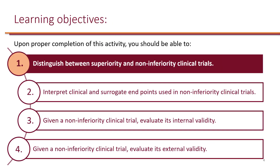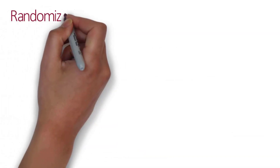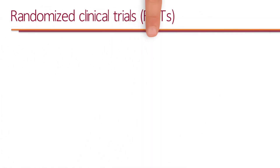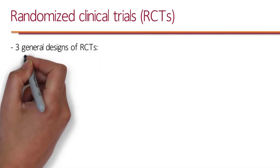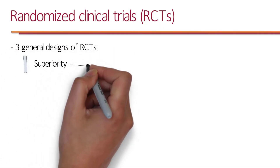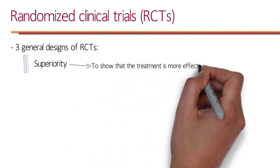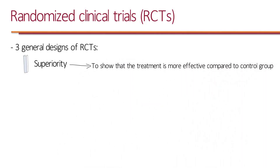The first learning objective is to distinguish between superiority and non-inferiority clinical trials. Let's take a look at randomized clinical trials. There are three general designs of RCTs. The first one is a superiority trial. The point of a superiority trial is to show the treatment in the intervention group is more effective or superior compared to the control group.